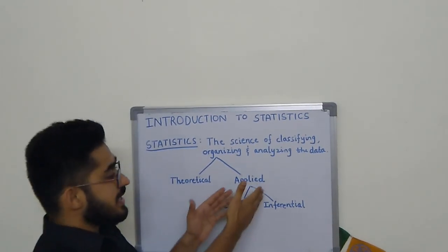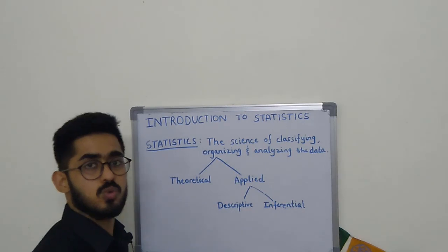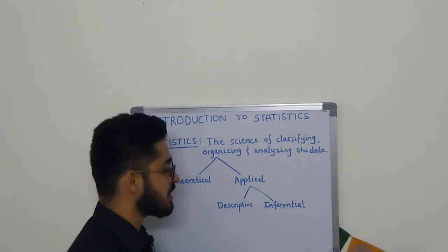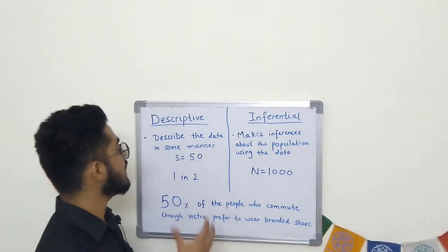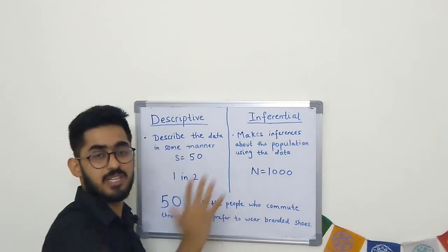Applied statistics is further divided into two subgroups: descriptive statistics and inferential statistics. Now let's see what descriptive and inferential statistics are.